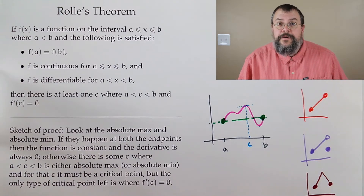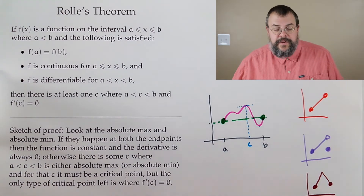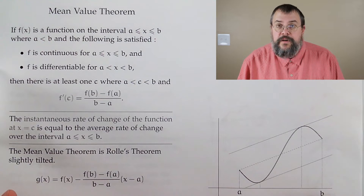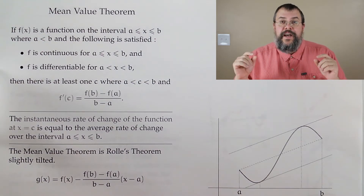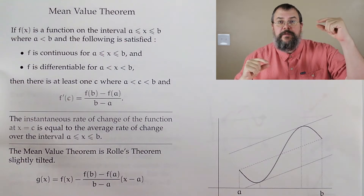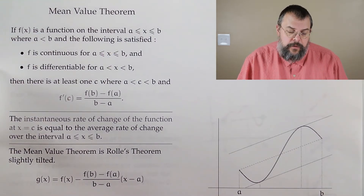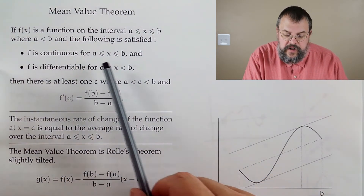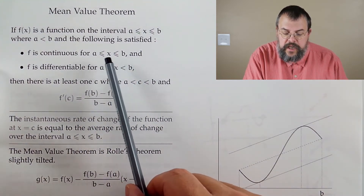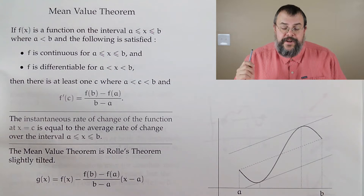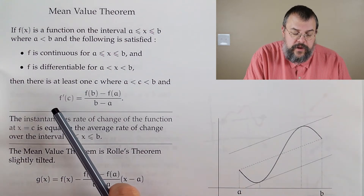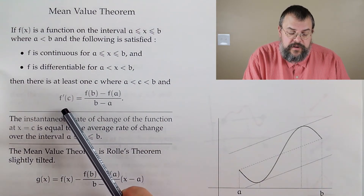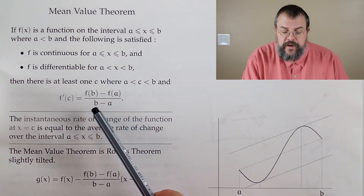That's our warm-up. The next one is the main event: the Mean Value Theorem. It's very similar — we just drop one assumption. The assumption we drop is that the endpoints don't have to have the same function value; now they can be different. We have a function on a closed bounded interval, continuous from A to B including the endpoints, and differentiable between A and B. Then there is some point C, maybe more than one but at least one, where f'(c) equals f(b) minus f(a) over b minus a.